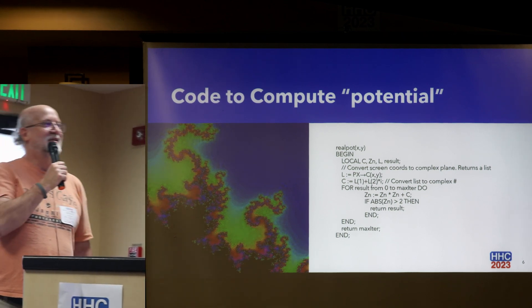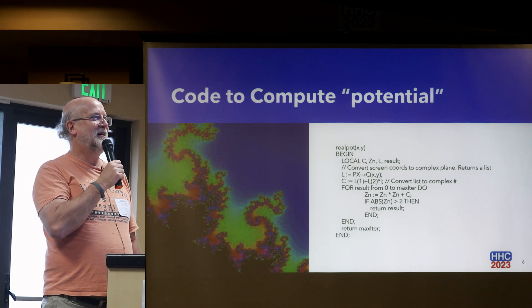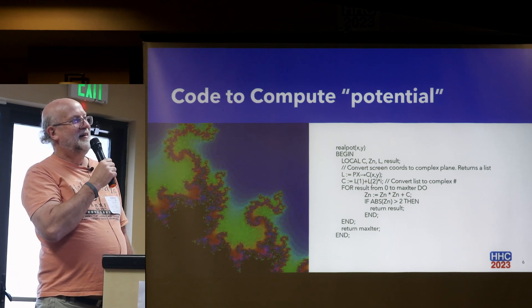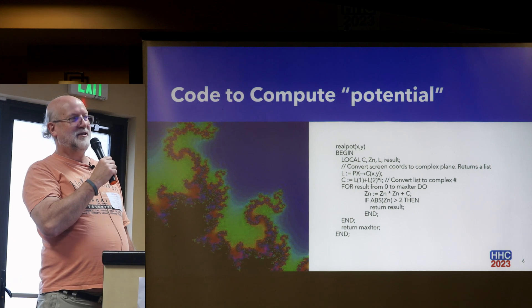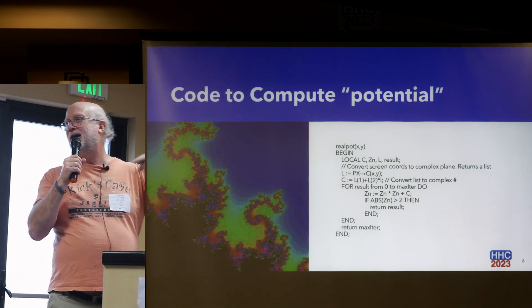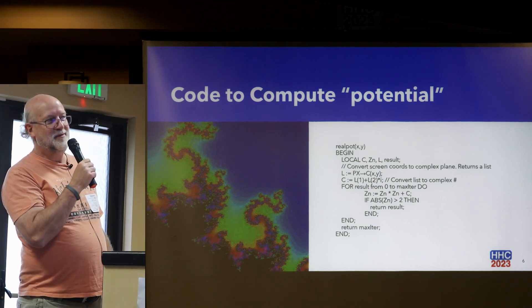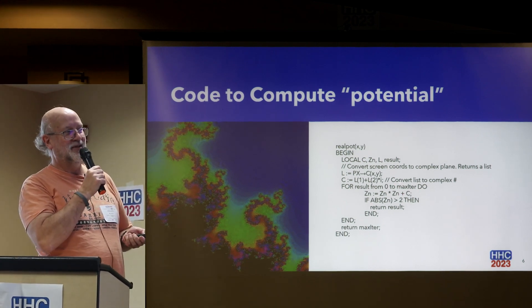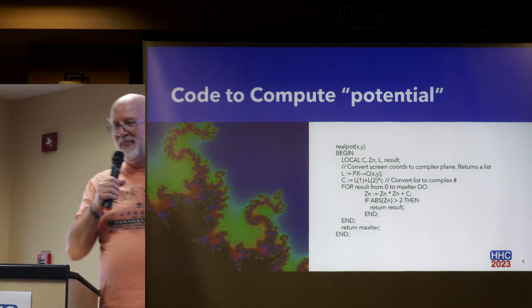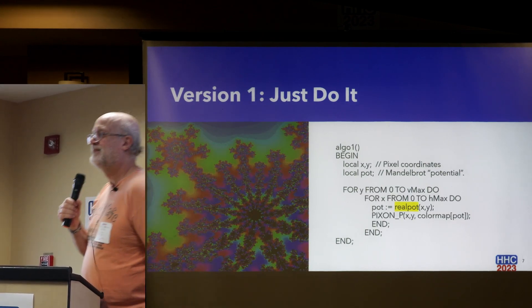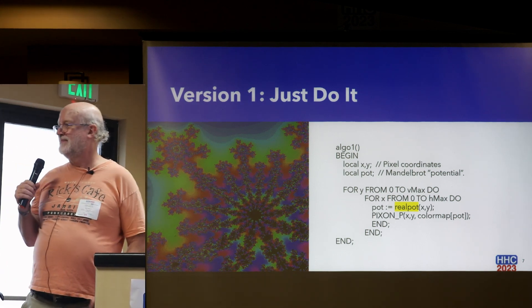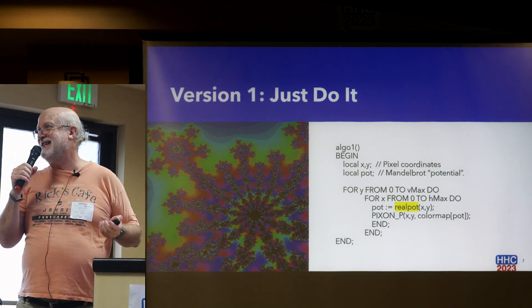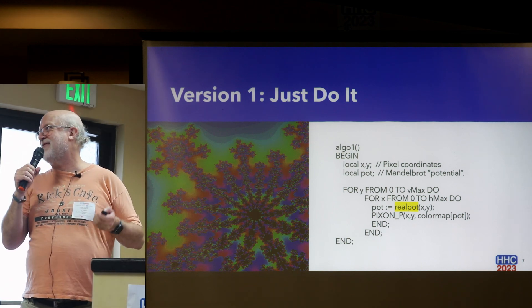The code to compute the potential is really simple. Here's the PPL code. You set local C, Z, and all that. You convert the pixel coordinates to the actual point on the complex plane. You run through a loop — computing the iteration — and if the absolute value is greater than two, you return the result. Otherwise, if you make it to the maximum iteration limit, you return that value. The math involved is what takes so long — certainly in the 1980s, this was very difficult to compute.